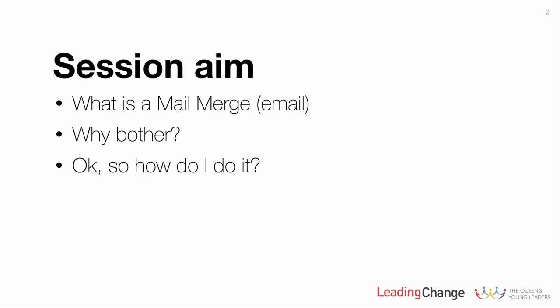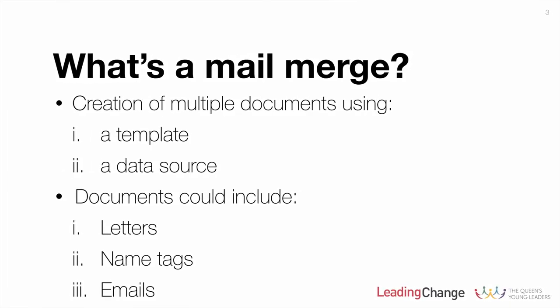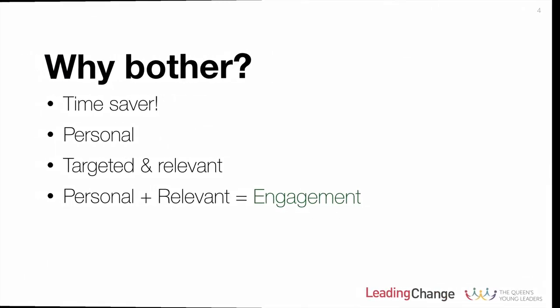Then we're going to walk through an example of actually creating our first mail merge email. So what do we mean when we talk about mail merge? It's really pretty simple — it's nothing more than the creation of multiple documents using two things: firstly a template, and secondly a data source. That data source could be anything, but typically it's going to be a spreadsheet containing information you've previously captured from customers. The types of documents you can create with mail merge include letters, name tags, other hard copy documents, and emails — and that's the example we're looking at in this session.